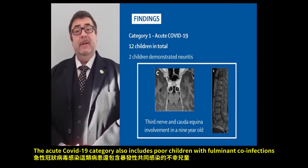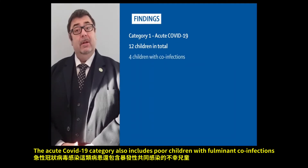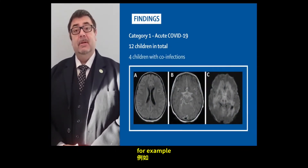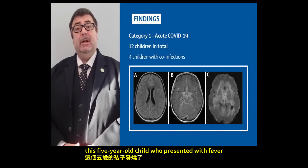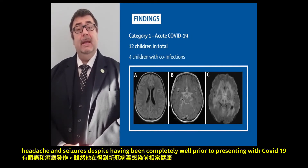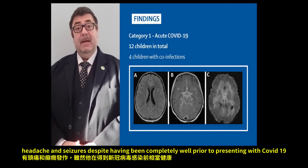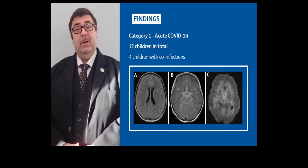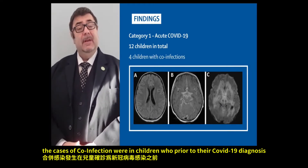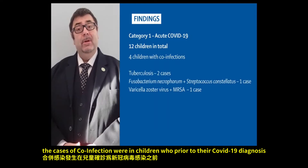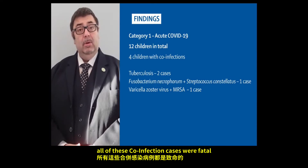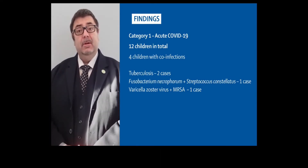The acute COVID-19 category also included four children with fulminant co-infections. For example, a five-year-old child who presented with fever, headache, and seizures, despite having been completely well prior to presenting with COVID-19. The cases of co-infection were in children who prior to their COVID-19 diagnosis had been well, and sadly all of these co-infection cases were fatal.